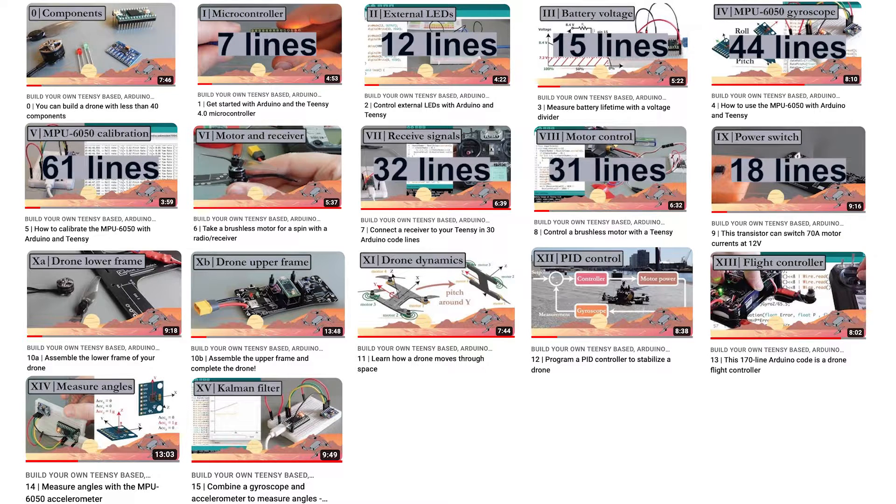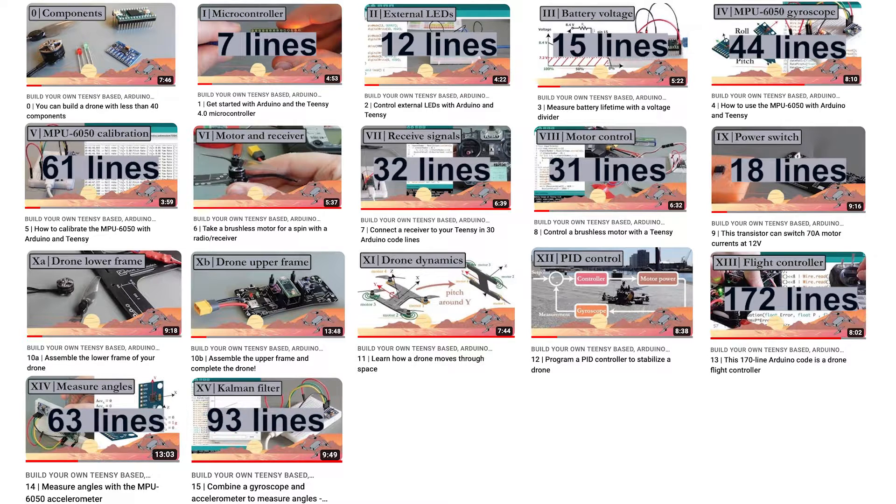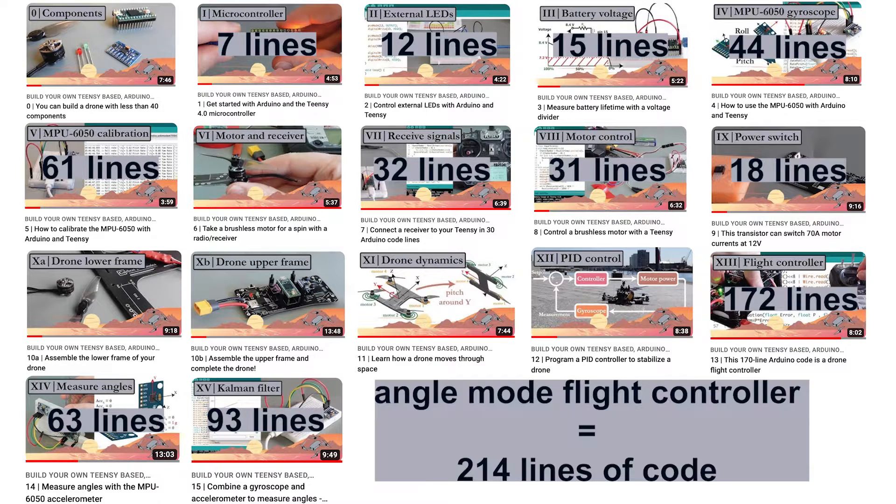As we progressed further and started to put everything together, we created our first flight controller with only 170 lines of code. We will continue to build on our previous videos and create our second flight controller which will contain 214 Arduino code lines.